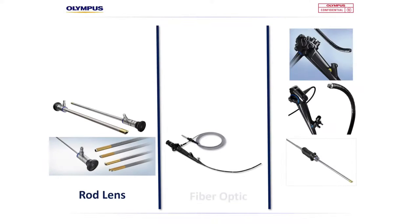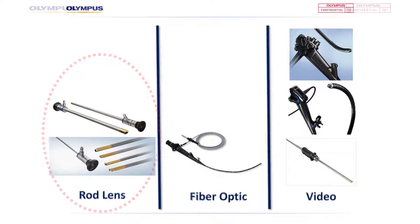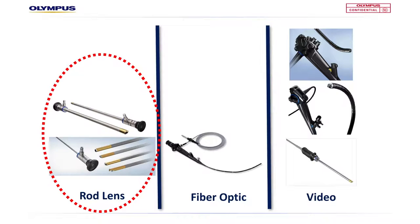The three categories of scopes discussed in this video will be rod lens, fiber optic, and video scope. Let's start first with the rod lens telescope. The rod lens scope is the traditional type of telescope used in many surgeries, used to ascertain the clinical image during surgeries such as laparoscopy, arthroscopy, hysteroscopy, and cystoscopy.